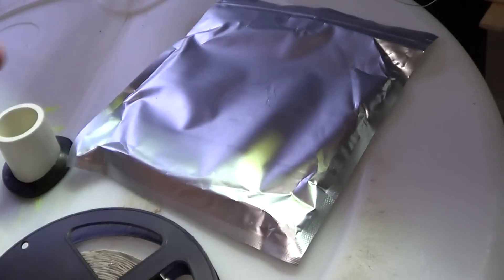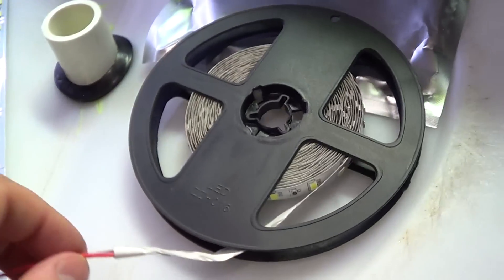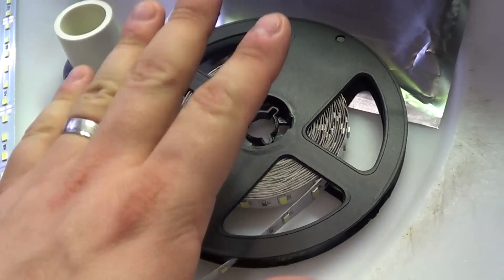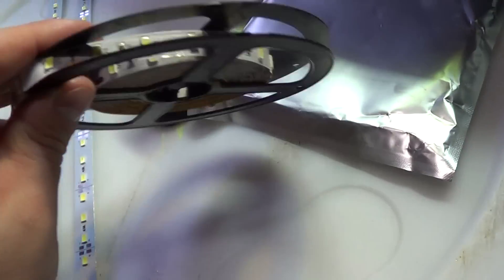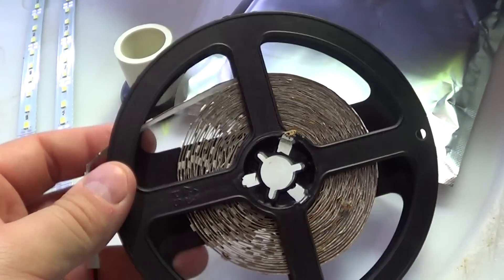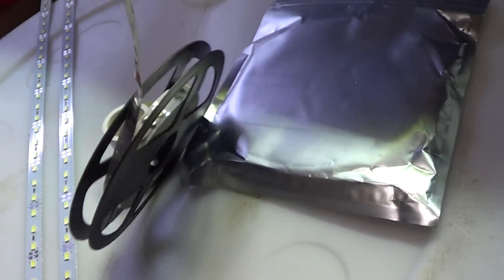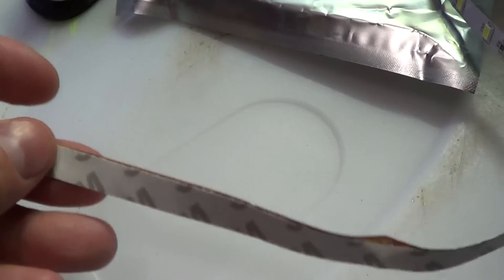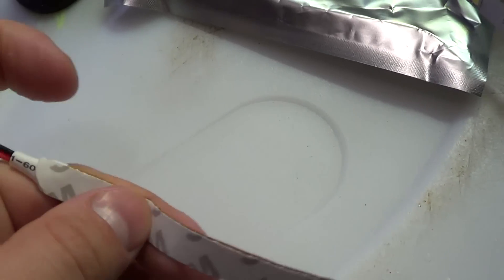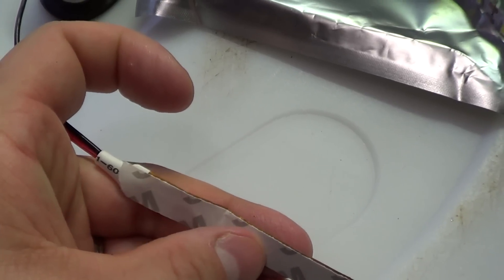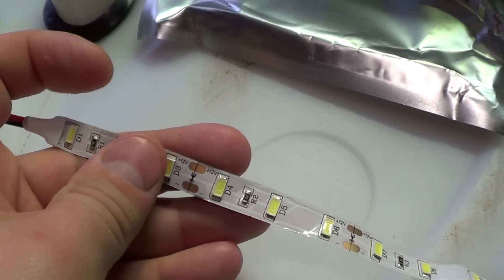You can buy them on Amazon, eBay, or Alibaba. It's basically a five meter reel of LED lights on a strip with backing that allows you to peel and stick the LED lights to whatever you want.